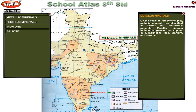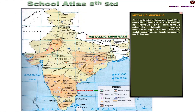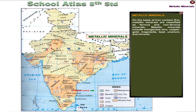Metallic Minerals. On the basis of iron content (Fe), metallic minerals are classified as ferrous and non-ferrous minerals. Metallic minerals include manganese, zinc, copper, gold, magnesite, lead, uranium and chrome.